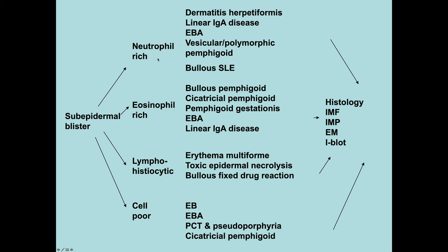The same issue applies to eosinophils — we think of them as a feature of bullous pemphigoid, but they may also be seen in epidermolysis bullosa acquisita, linear IgA disease, and others. So although the histology can give pointers in the right direction, other techniques are necessary before we can reach a more definitive diagnosis. I'm going to discuss immunofluorescence, immunoperoxidase, and will touch on electron microscopy and immunoblotting.